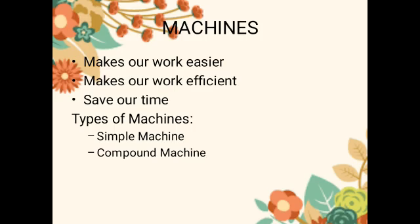So what is a machine? It is something made up of some objects or parts that makes our work easier, makes our work efficient, and also saves our time. These are the three main things that happen due to machines. Machines are things that make our work easier, efficient, and save our time.